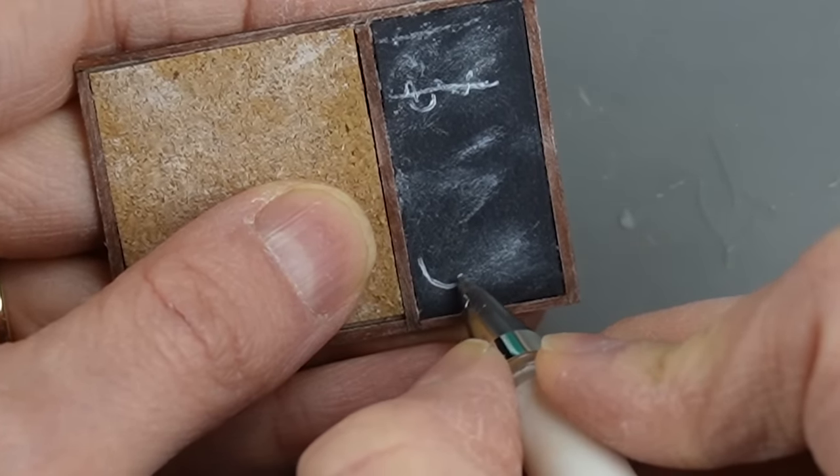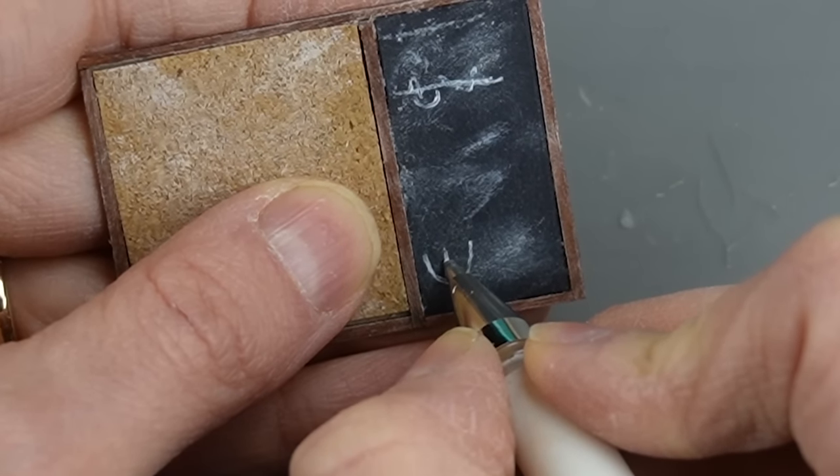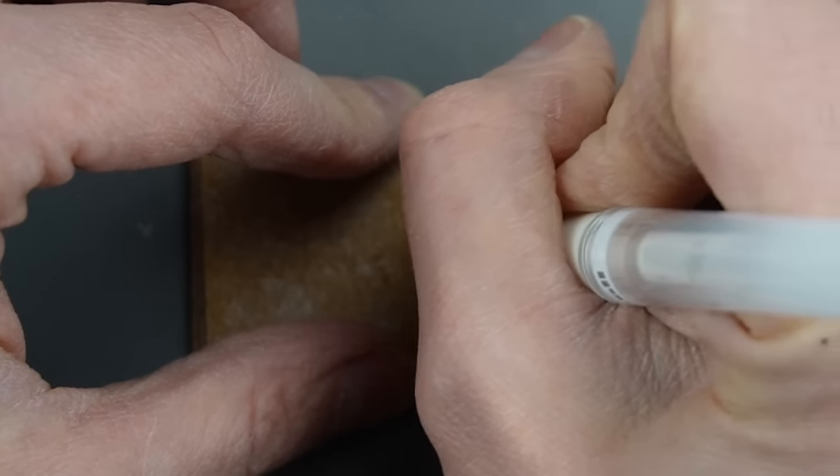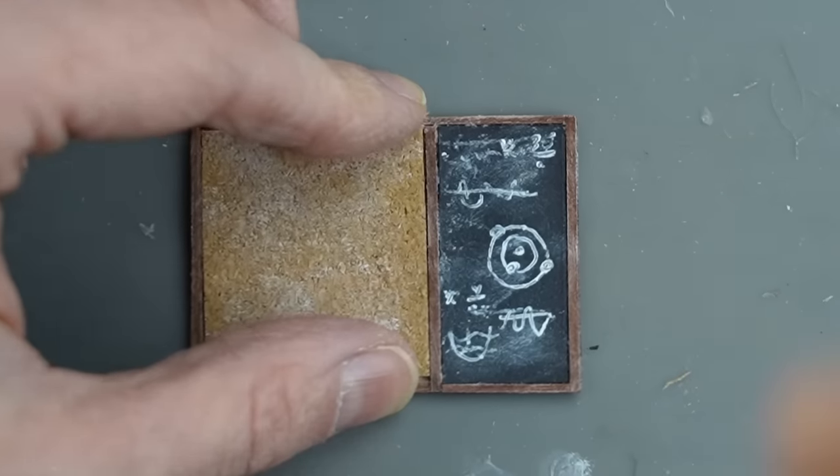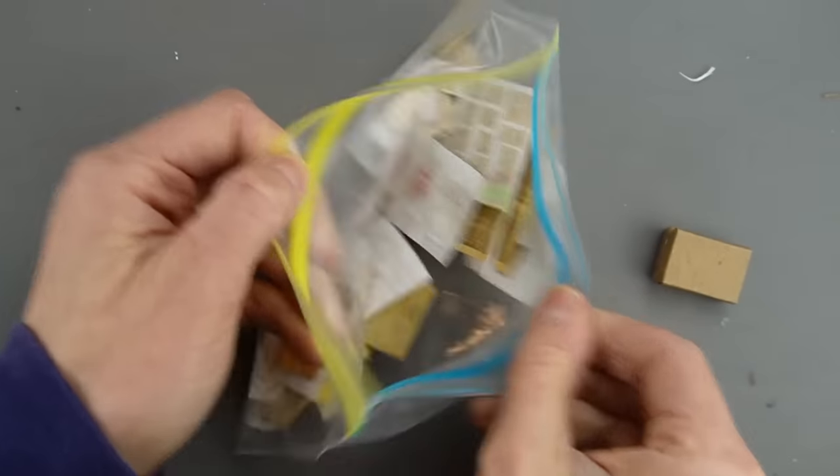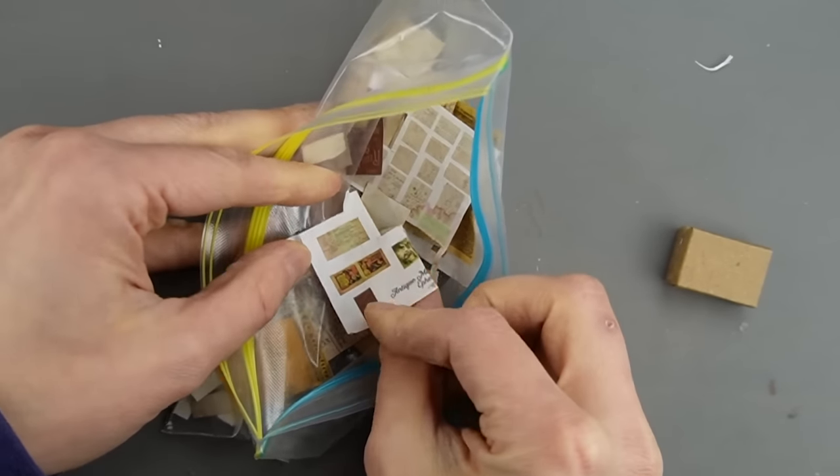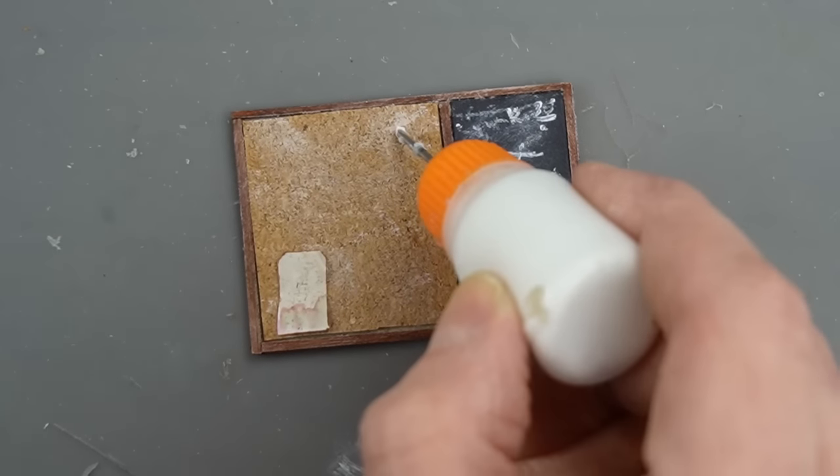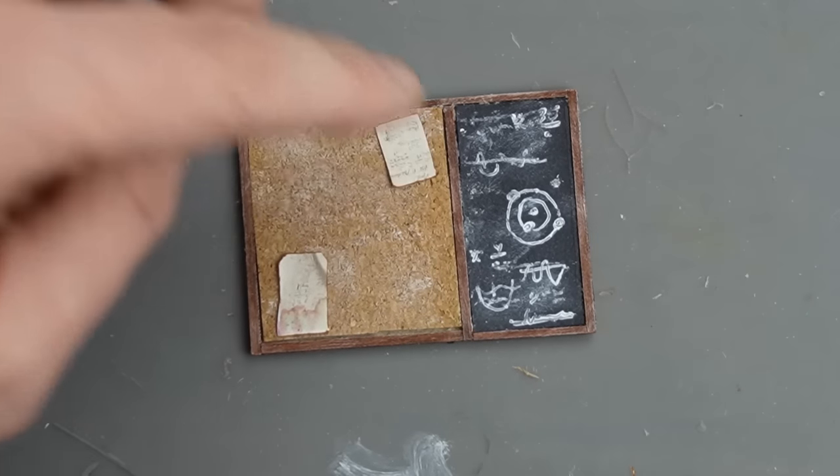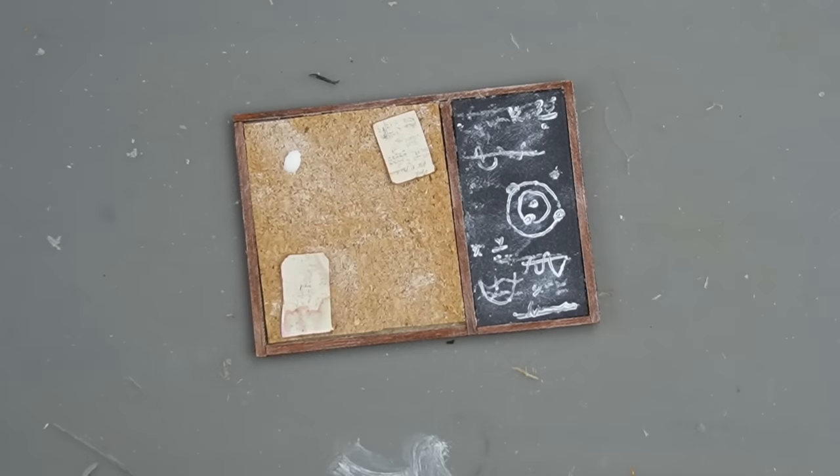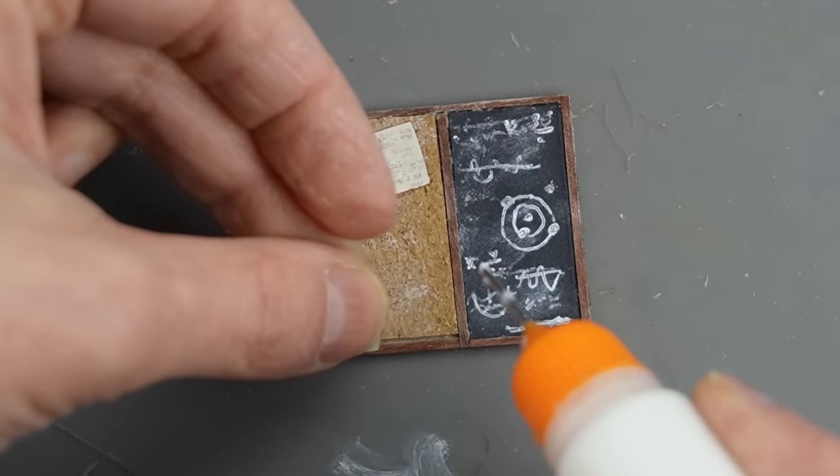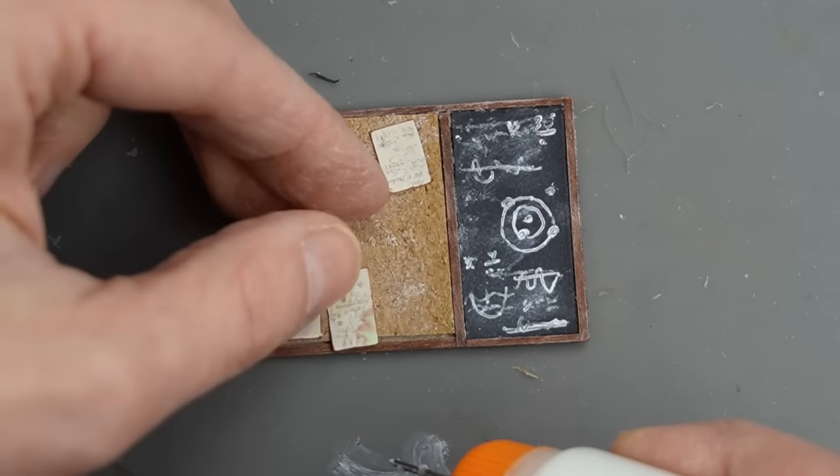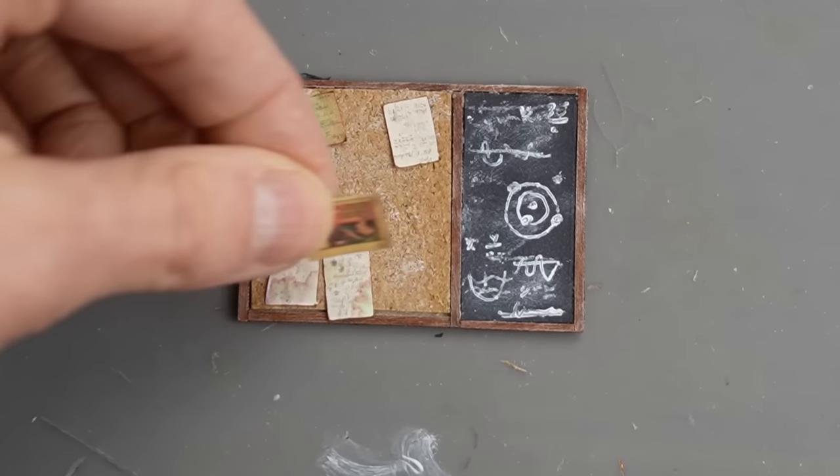I googled chalkboard science to get some ideas of things I can draw on the chalkboard. For every project I do, I google reference images because it helps my creativity and gives me ideas. One day I wasn't feeling very creative, but I still wanted to do something for my miniature hobby. So I printed out a bunch of Etsy files, cut them out, and colored the edges with marker. So now on a day like today when I'm creative and the ideas are flowing, I can just add these pieces to my work instead of having to stop to do a time-consuming, tedious task.